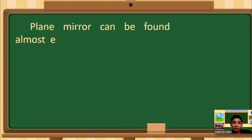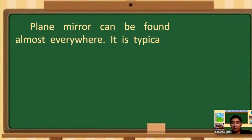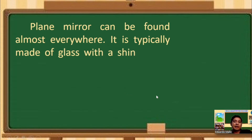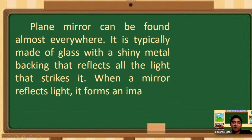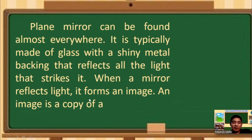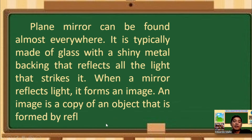A plane mirror can be found almost everywhere and we keep using it daily. It is typically made of glass with a shiny metal backing that reflects all the light that strikes it, or it is made up of mercury at the back portion of the mirror. When a mirror reflects light, it forms an image. An image is a copy of an object that is formed by reflection.